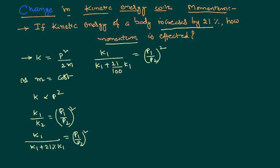By simplifying this we can write k1 by k1 plus 0.21 times of k1 equal to p1 by p2 whole square. Therefore k1 by 1.21 times of k1 equal to p1 by p2 whole square.